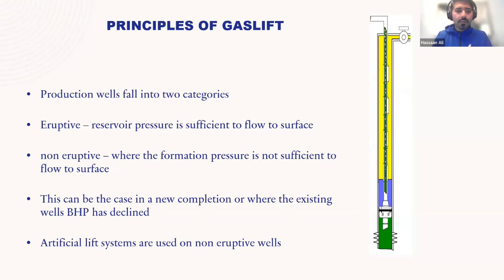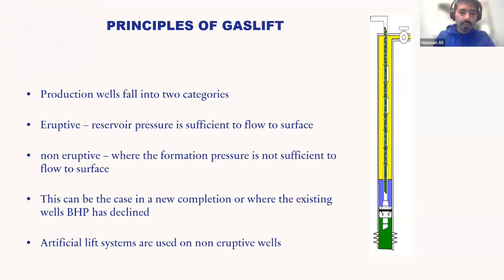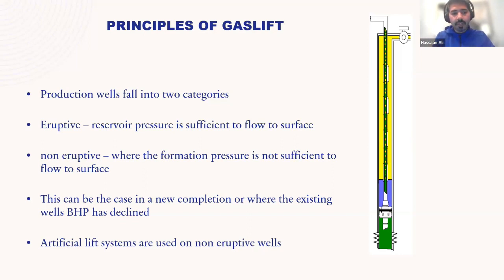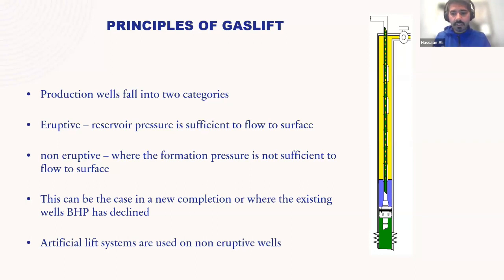There are two types of production wells: eruptive wells, in which reservoir pressure is enough to push fluid all the way to the surface, and non-eruptive wells, in which the bottom hole pressure is not sufficient. This can occur in newly developed wells or existing wells where production has tapered off and bottom hole pressure has declined over time. For non-eruptive wells, some sort of artificial lift system is required, and this has become more common as formations mature.